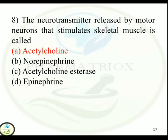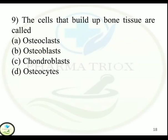Question 9: The cells that build up bone tissue are called — Option A: Osteoclast. Option B: Osteoblast. Option C: Chondroblast. Option D: Osteocytes. Correct answer is Option B — Osteoblast.